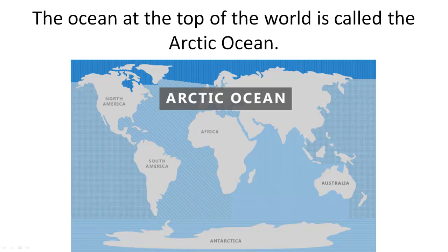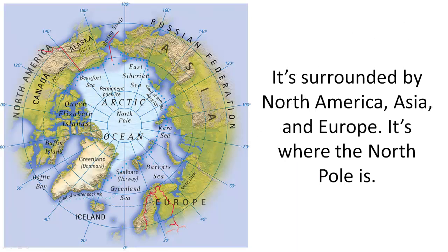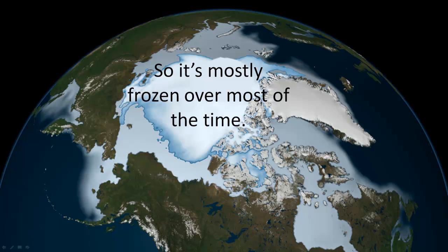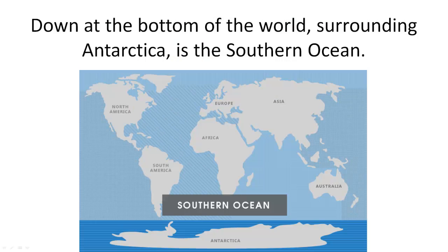The ocean at the top of the world is called the Arctic Ocean. That's the smallest. It's surrounded by North America, Asia, and Europe. It's where the North Pole is, so it's mostly frozen over most of the time. Down at the bottom of the world, surrounding Antarctica, is the Southern Ocean.